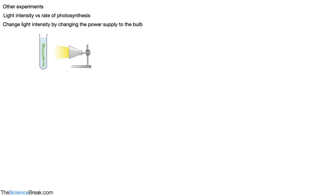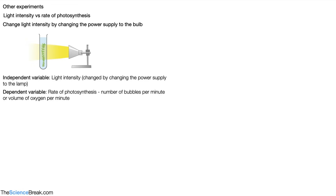There are other experiments we could do that have come up on past paper questions. We could look at light intensity versus rate of photosynthesis without changing the distance of the lamp — instead, we change the intensity by changing the power supply to the bulb. With low, high, and higher power, we get increasing light intensity. The independent variable is light intensity, changed by changing the power supply. The dependent variable is the rate of photosynthesis measured by bubbles per minute or volume of oxygen per minute. Control variables are temperature, concentration of sodium bicarbonate, and the distance of the lamp, which must be kept the same.